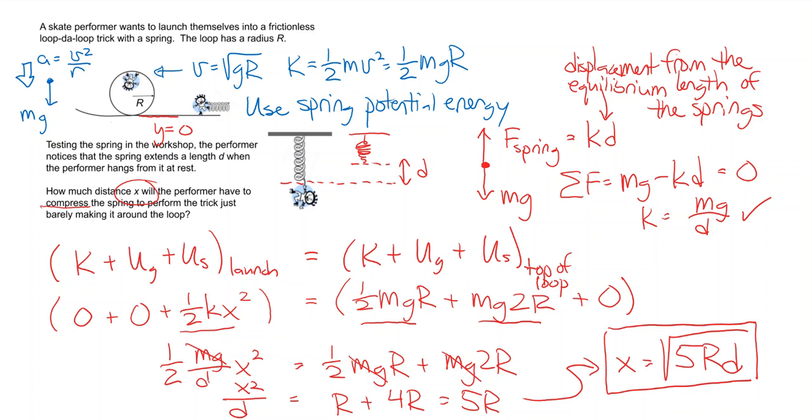So there you go. If you take this spring and find that when you hold onto it when it's attached to the ceiling, the spring stretches by an amount d, and you're trying to get up and around a loop of radius r, you need to compress that spring by the square root of 5 times r times d. Interesting problem.